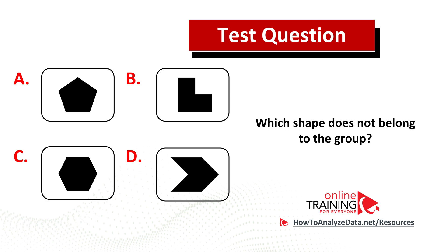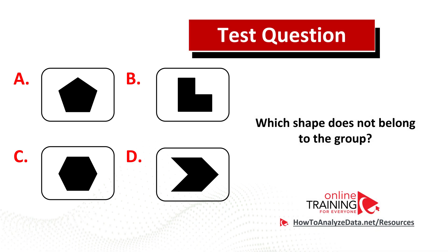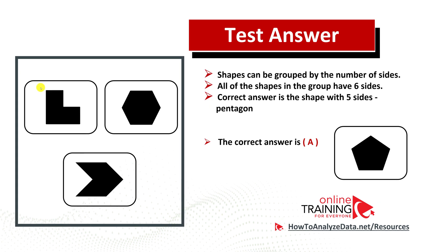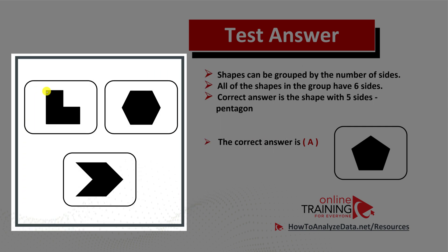This question is quite tricky, but I would like to show you the solution so we can solve this interesting and tricky question together. Which shape does not belong to the group? You have 4 choices of shapes. Now might be a good time to pause this video to see if you can come up with the answer on your own. In this case, shapes can be grouped by number of sides. You see that all the shapes except one have 6 sides — for example, counting the sides of the first shape: 1, 2, 3, 4, 5, 6.